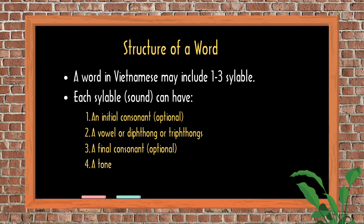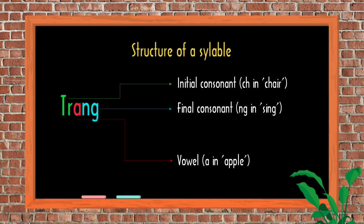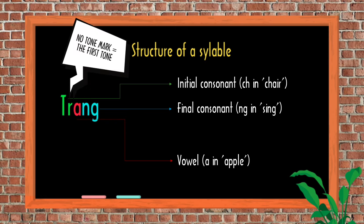Each syllable can have one optional initial consonant and another optional final consonant, a vowel or a diphthong or triphthong, and different from English, it always has a tone. You can look at my name as an example. The initial consonant is TR, which is pronounced as CH in 'chair' in English. The middle vowel is pronounced as A in 'apple,' and the final consonant NG is pronounced like NG in 'sing' in English. And no tone mark means the first tone in Vietnamese.